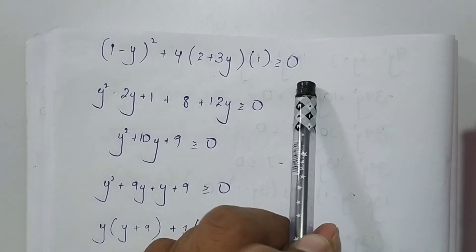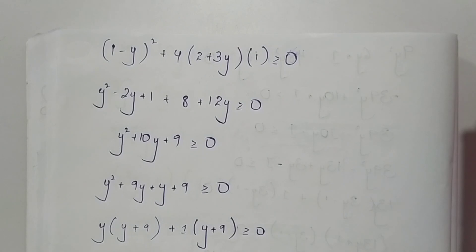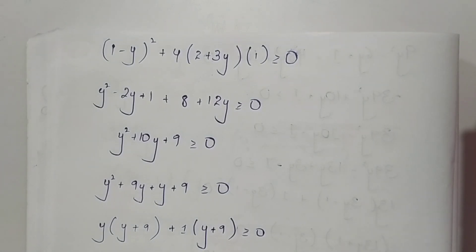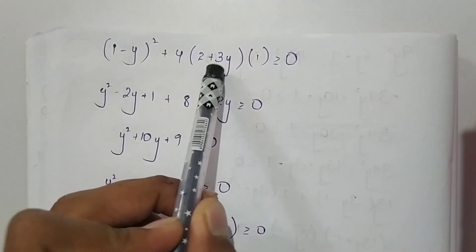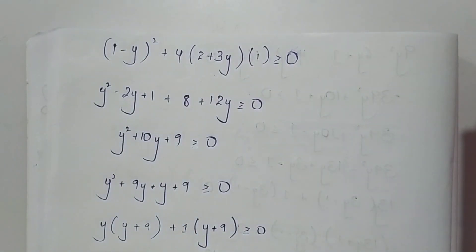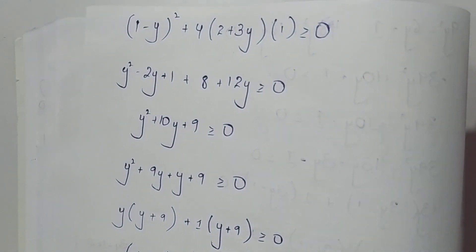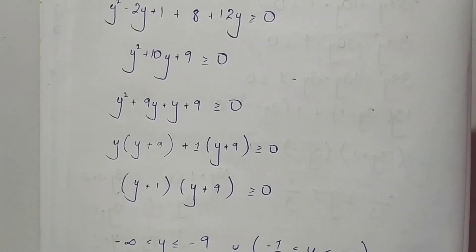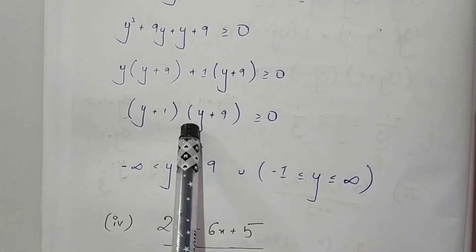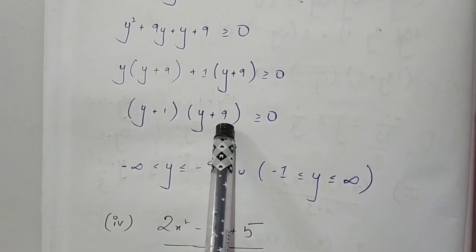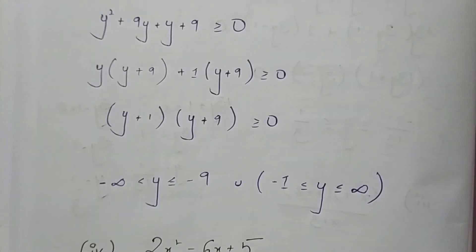Solving the discriminant condition: (1 - y)² + 4(2 + 3y) ≥ 0 gives y² - 2y + 1 + 8 + 12y ≥ 0, which simplifies to y² + 10y + 9 ≥ 0, factoring as (y + 1)(y + 9) ≥ 0.